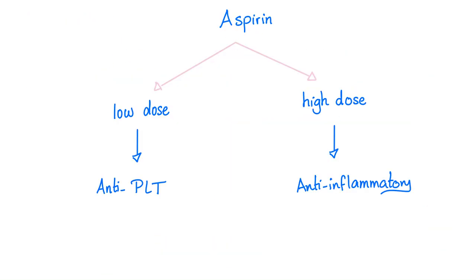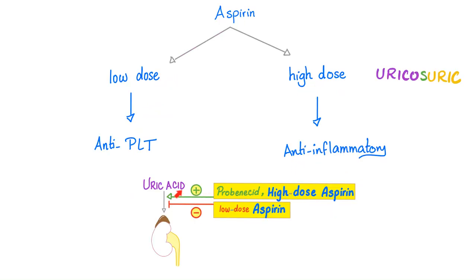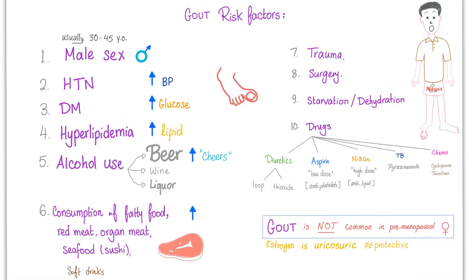Regarding aspirin and uric acid: aspirin at low dose is anti-platelet, and at high dose it's anti-inflammatory — that's why high dose is good for gout, because gout is inflammatory. High-dose aspirin is also uricosuric: it gets rid of uric acid in the urine, which is great if you have gout. But low-dose aspirin is problematic — it prevents uric acid secretion.